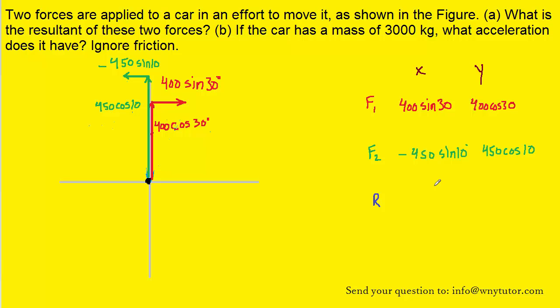After filling in the components into the table, we can find the x and the y components of the resultant by simply adding the x components vertically in the table to get a resultant x component, and then do the same thing for the y components. The x component of the resultant would therefore be approximately 121.9 newtons, and the y component turns out to be about 789.6 newtons.